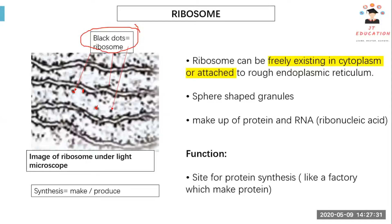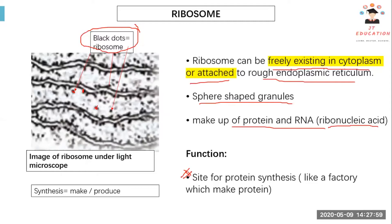Ribosomes can exist freely in the cytoplasm or attached to the rough endoplasmic reticulum. They are sphere-shaped granules made of protein and RNA — ribonucleic acid. The function of ribosomes is to synthesize protein, acting like a factory making proteins for the body, which are vital for muscle building, growth, and many other functions.